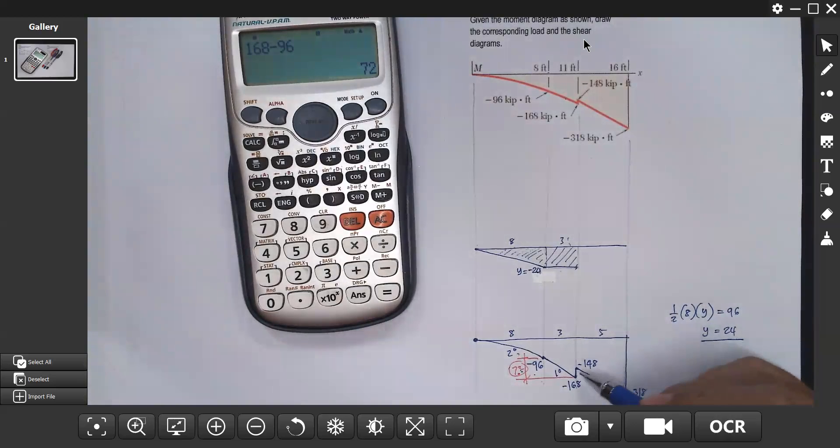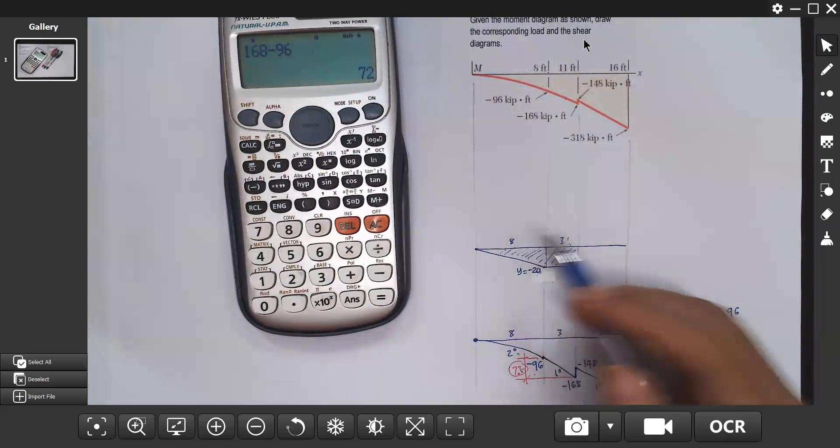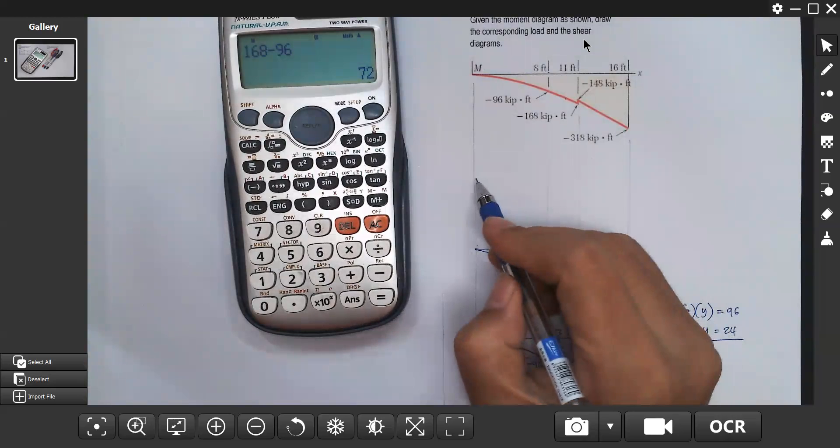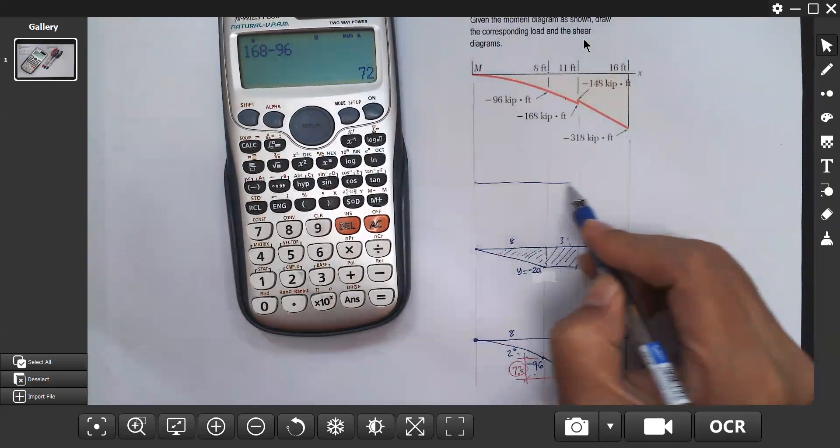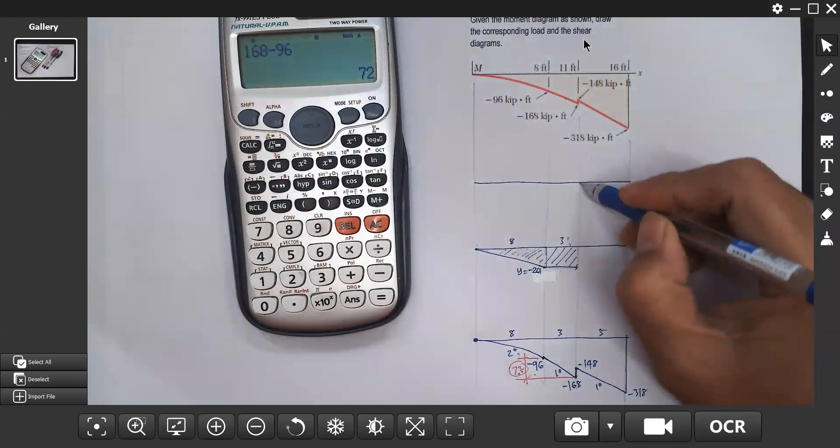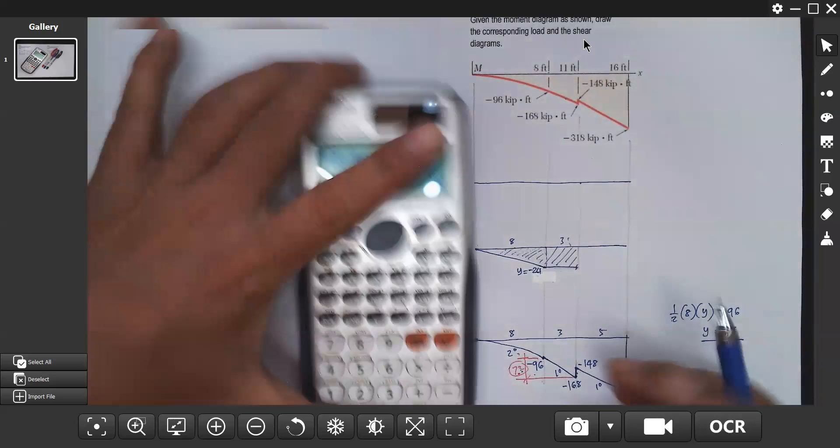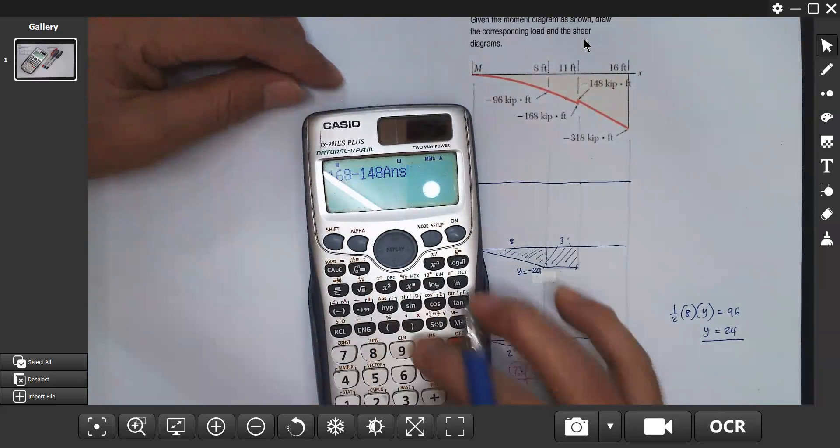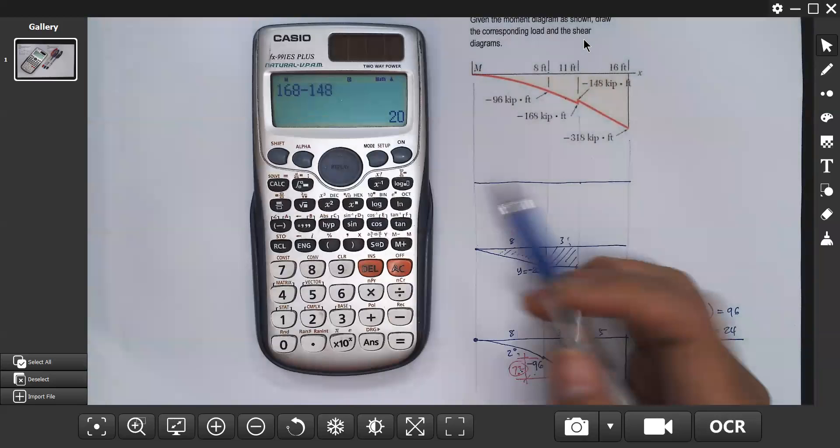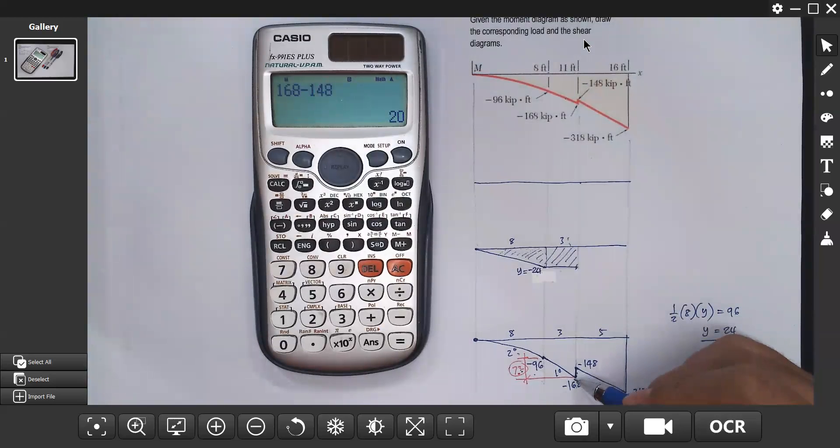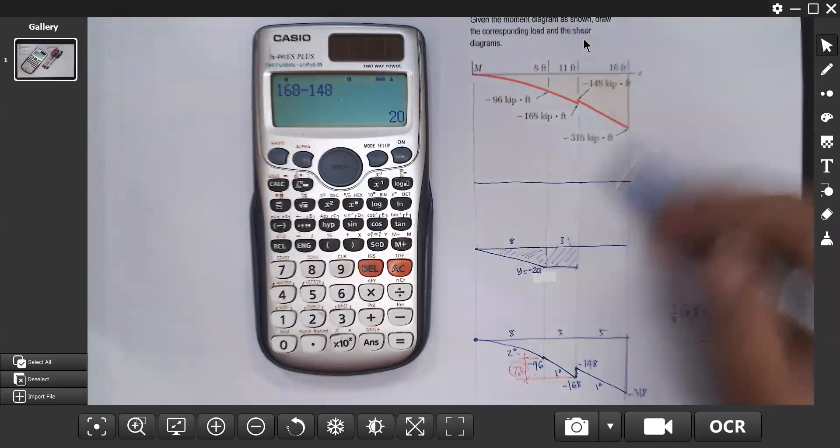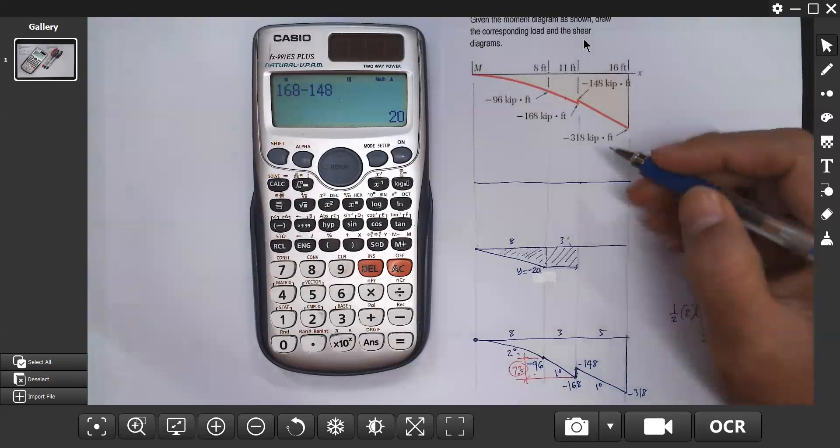Next, the vertical line means there's an external moment on the beam. From negative 168 to negative 148, that's an increase of 20. Based on sign convention, positive external moment means clockwise, so there's a clockwise moment of 20. The unit is kip-feet.